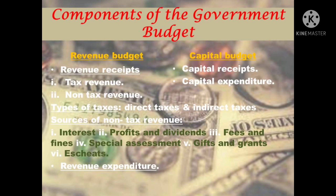Next, components of the government budget. The budget has two broad components: revenue budget and capital budget. Revenue budget includes revenue receipts and revenue expenditure of the government. Capital budget includes capital receipts and capital expenditure of the government.